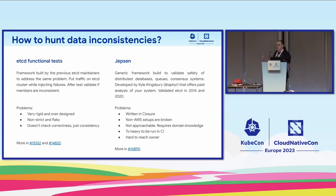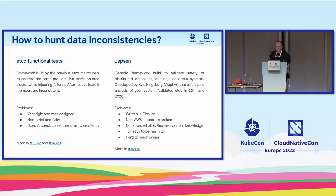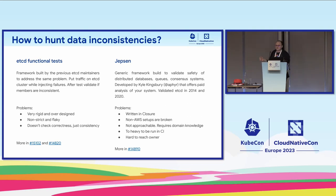So how do we hunt for inconsistencies? Previously etcd was using functional tests: run an etcd instance, do some failure injection, and verify if the state is consistent between members. The main problem was they were written by one person, and when that person left the project no one knew how to use them. They were flaky and didn't solve the issue end-to-end — they just gave a very unreliable signal.